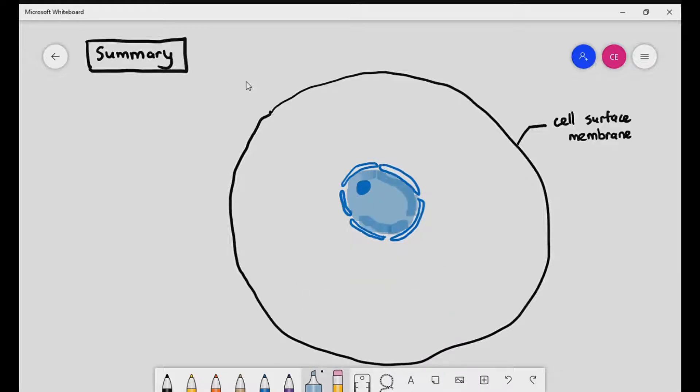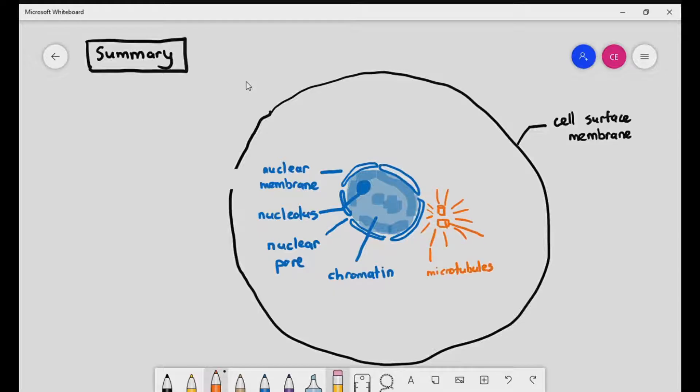the nuclear pore, and also chromatin. Chromatin is just linear DNA with histone proteins. You can also see the orange colored structure over there, which is the microtubules, and also the cylindrical structure, which are the centrioles. And together, they form something known as the centrosome.